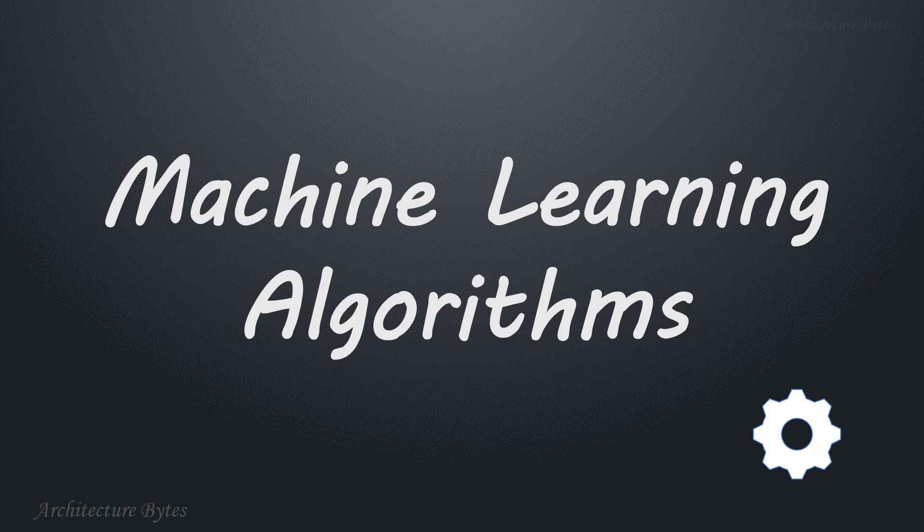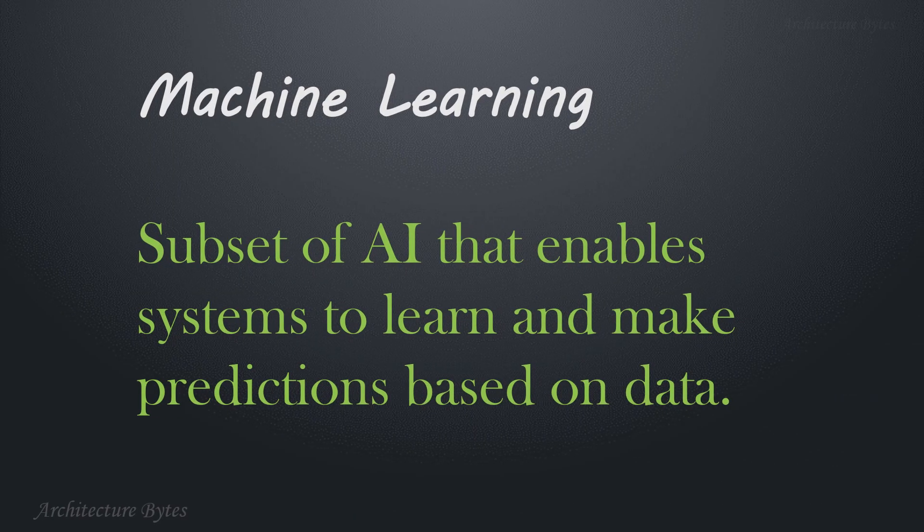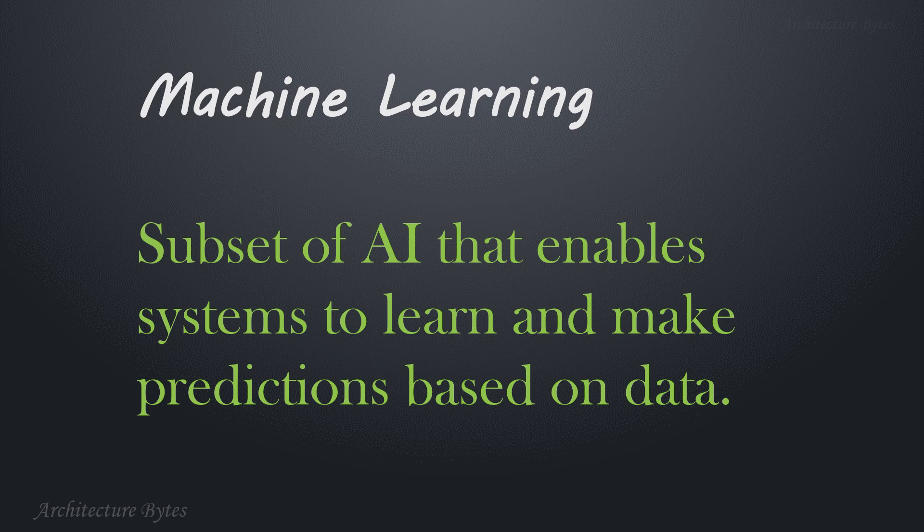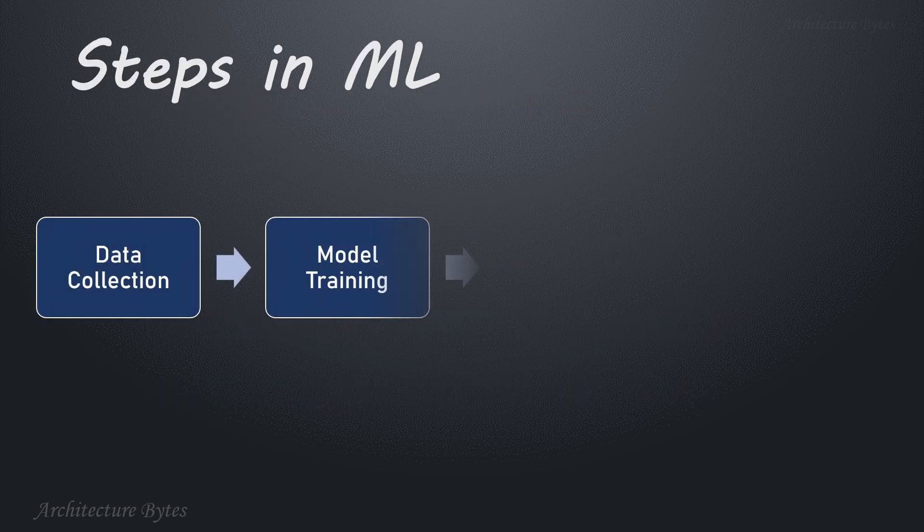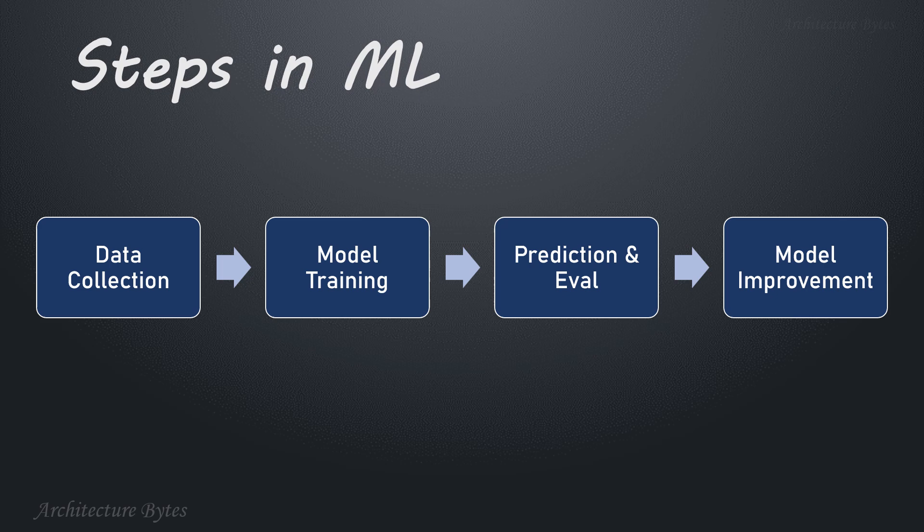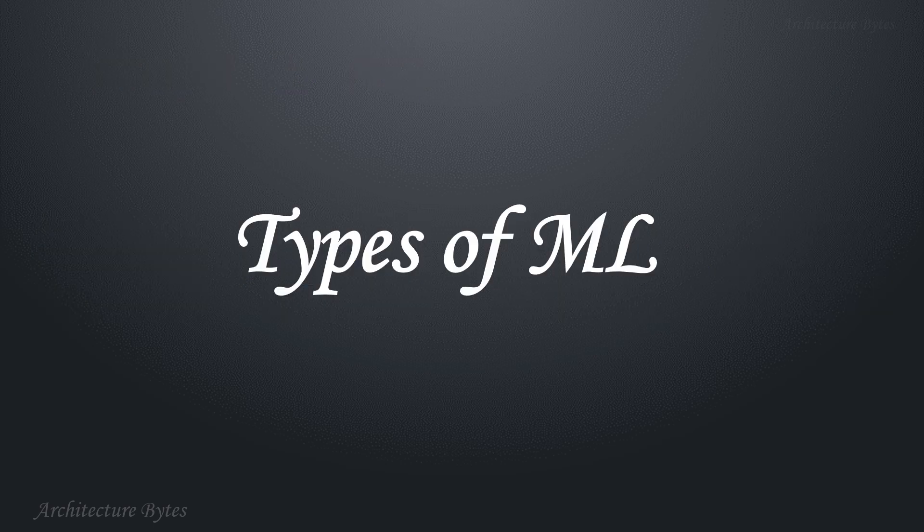Machine learning algorithms. Machine learning is a subset of AI that enables systems to learn and make predictions based on data. Typical steps in machine learning are data collection, model training, prediction and evaluation, and model improvement. Let's look at types of machine learning.